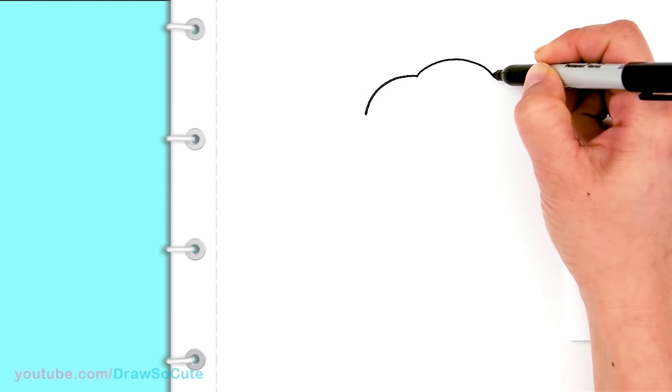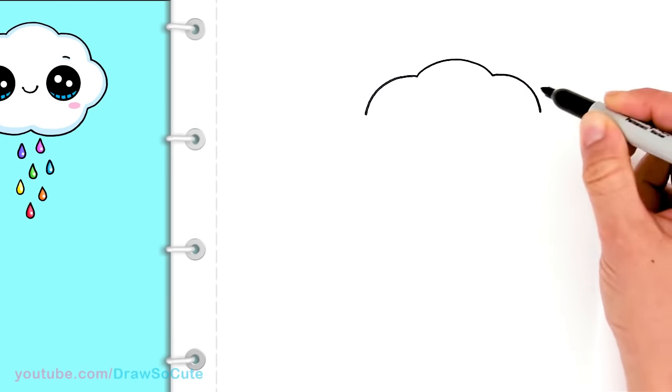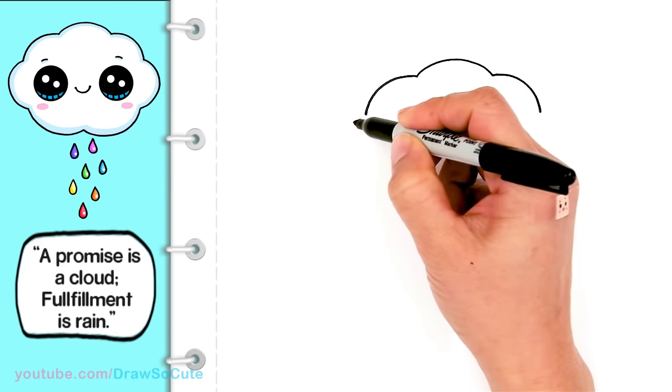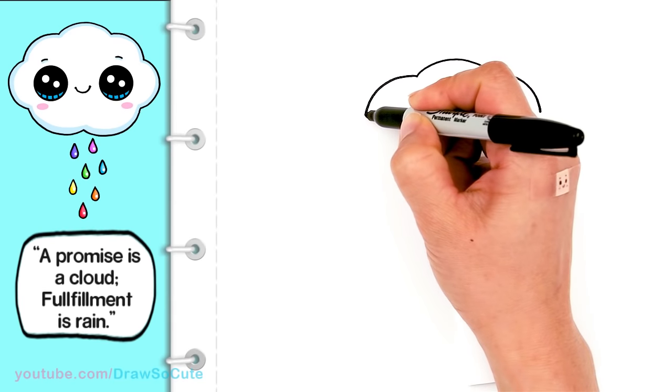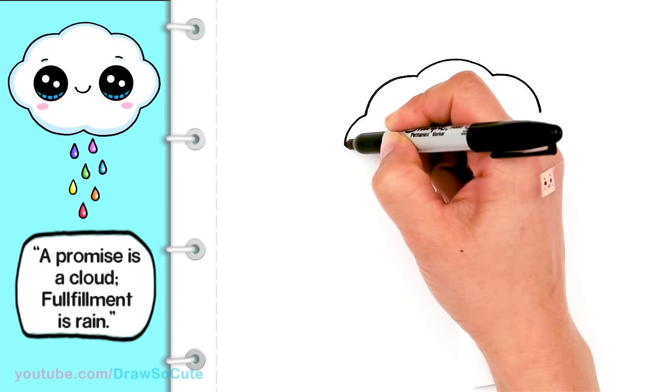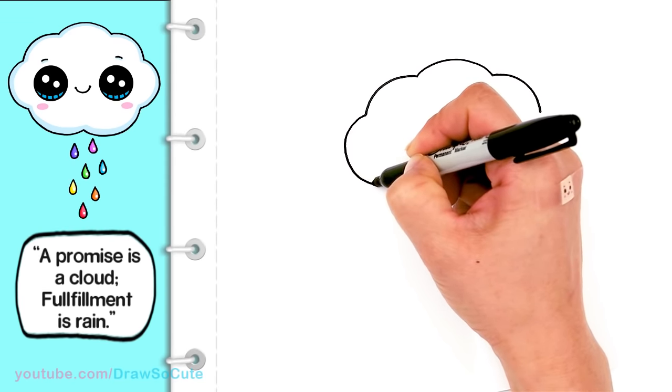And I'm going to draw the same thing on the other side. That way, it's just a little bit easier to gauge it. And then from there, I'm going to draw another curve that pops out on this side. A nice fluffy cloud.